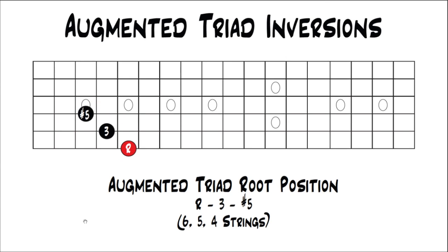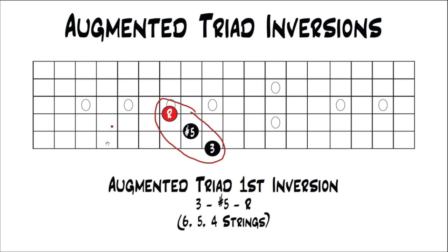All you really have to think about is taking your shape and moving it up a major third each time — that shape is going to stay the same. So if you take your root position and move it up a major third, every note just moves up a major third because it's a symmetrical chord; all the intervals are the same distance apart. So your new chord — first inversion — looks exactly like it did in root position, but your intervals change. Now it's a 3, sharp 5, root, when before it was a root, 3, sharp 5. That's what's unique about symmetrical chords: the shape stays the same as you move to the next inversion, but the order of the intervals changes.